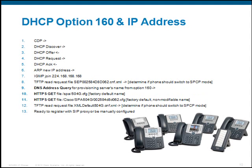If you use option 160, in step 9 the phone does a DNS query for the provisioning server's name, which it received in option 160 from the DHCP server. Then steps 10 and 11 are similar to what you've seen before, where the phone now attempts to securely retrieve the configuration files.